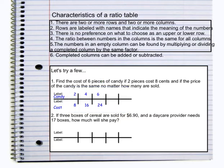So again, the question says, find the cost of six pieces of candy. So I would say the cost of six pieces of candy is 24 cents.